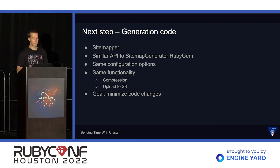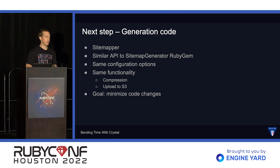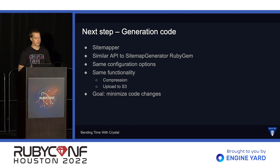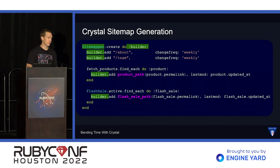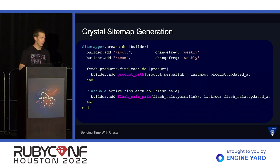Now that we've figured out data modeling, let's look at how we handle sitemap generation. The Crystal shard for this is Sitemapper. It has a similar API to the Ruby gem Sitemap Generator. It has the same configuration options and the same functionality — mostly compression of the output data, uploading to S3, and pinging search engines to tell them we've updated our sitemaps. Our goal is to minimize code changes for the sitemap generation code. Showing this slide from earlier, the changes are very minimal: we have to change the constant, add the block variable, and call add on that block variable.